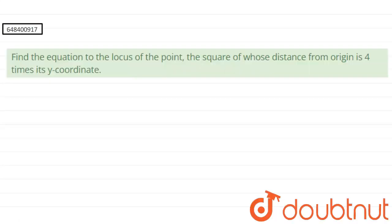Hello, for this question, it says that find the equation of locus of the point, the square of whose distance from origin is 4 times its y coordinate. So, I will assume the point to be x, y.